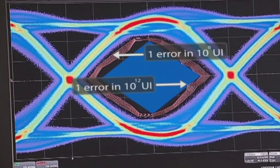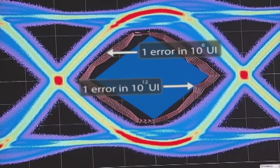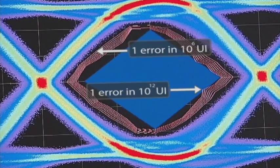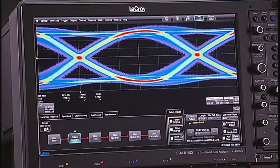The compliance mask is displayed showing that this device passes the mask down to the specified bit error rate of 1 in 10 to the 12th. While the eye pattern provides a good overview of the signal integrity, interoperability requires more in-depth analysis of the jitter.